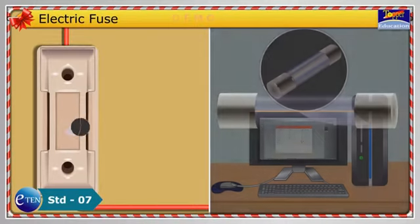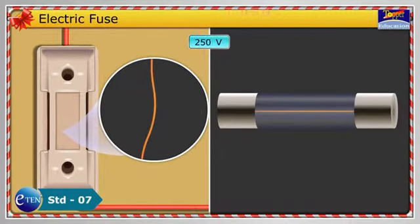The electric fuse works on the principle of heating effect of a current. The amount of heating caused depends on the amount of current flowing through the wire. With the increase in current, the electric fuse is heated more.